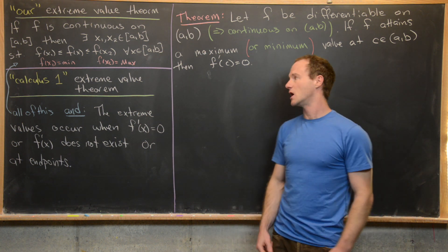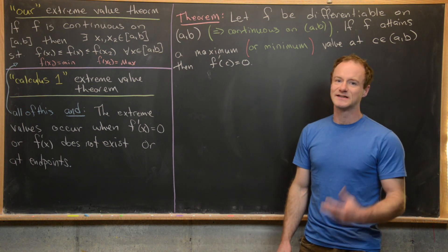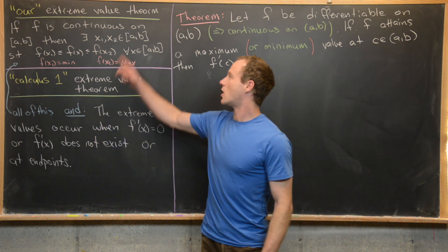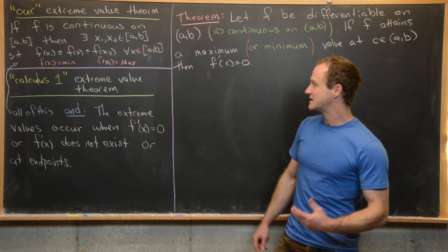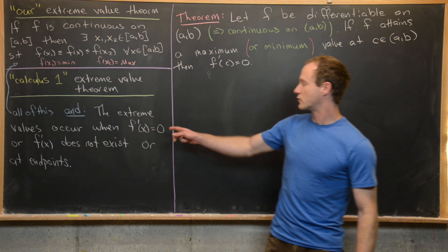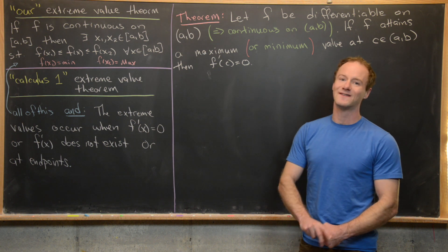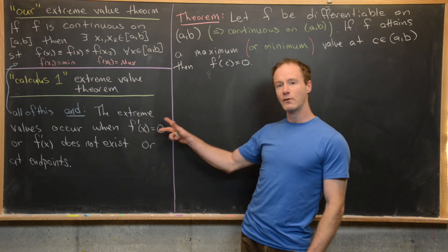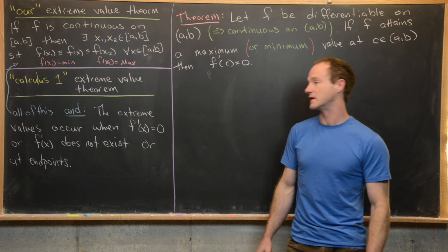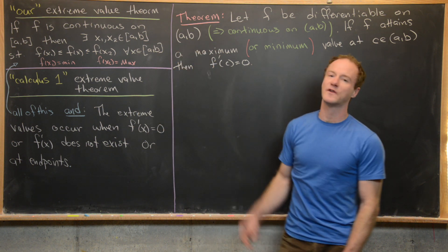Now I want to compare and contrast that with the calculus one extreme value theorem — the one that you learn in a calculus one class. That says all of this, with the addition that the extreme value occurs when the derivative equals zero, or the derivative does not exist, or at the endpoints.